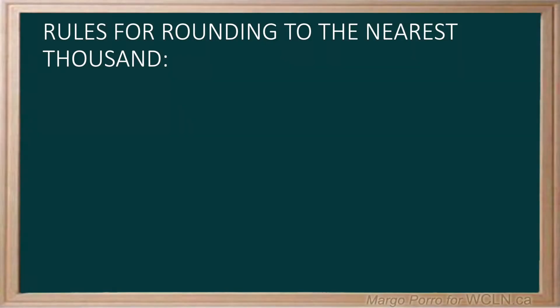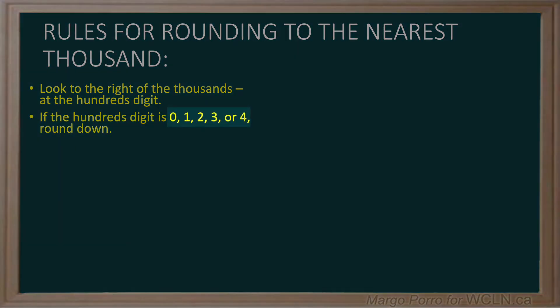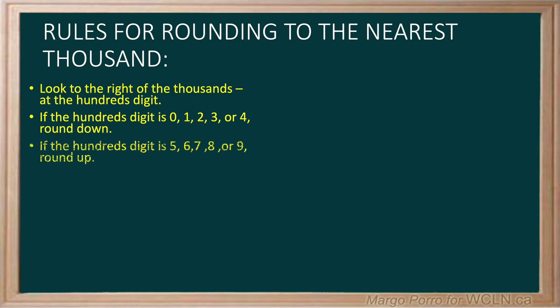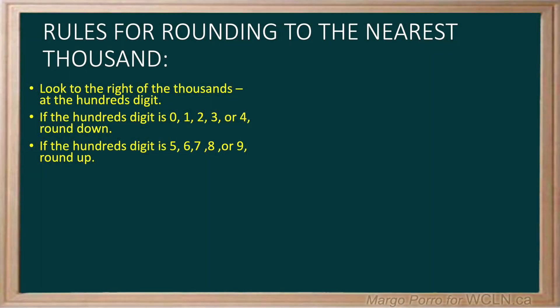The rules for rounding to the nearest thousand are like the rules for rounding to the nearest hundred or tens. Look to the right of the thousands at the hundreds digit. If the hundreds digit is zero, one, two, three, or four, round down. If the hundreds digit is five, six, seven, eight, or nine, round up.